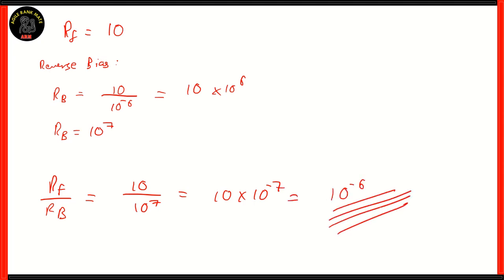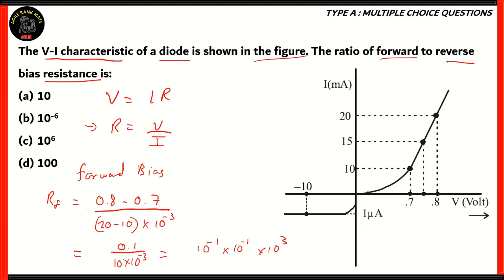So 10⁻⁶ is the ratio of forward to reverse bias resistance. Option C is incorrect because the exponent is wrong. Options A and D are incorrect because the order is incorrect. Therefore, the correct answer is option B, 10⁻⁶.